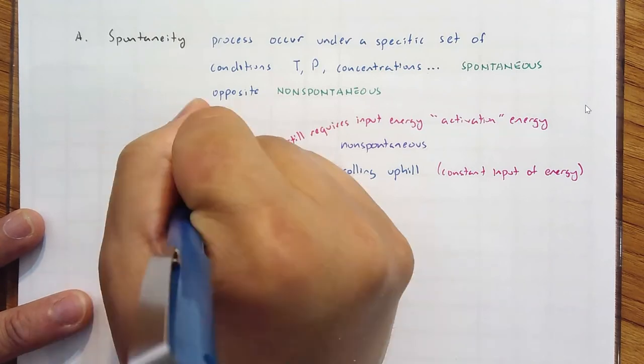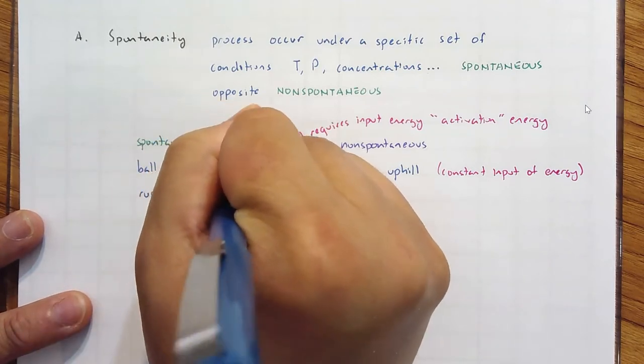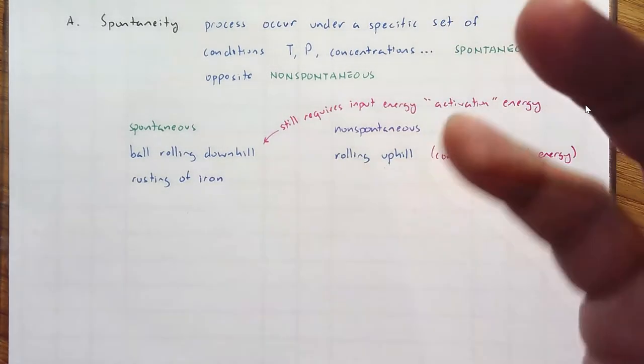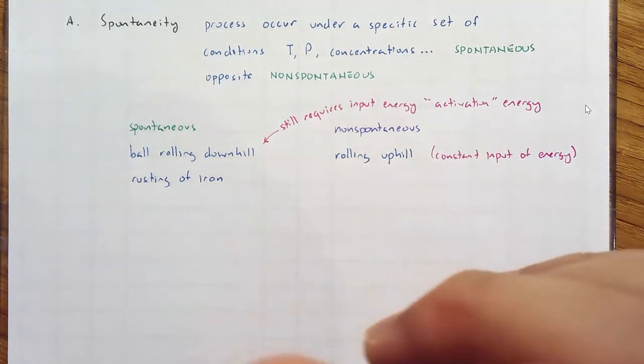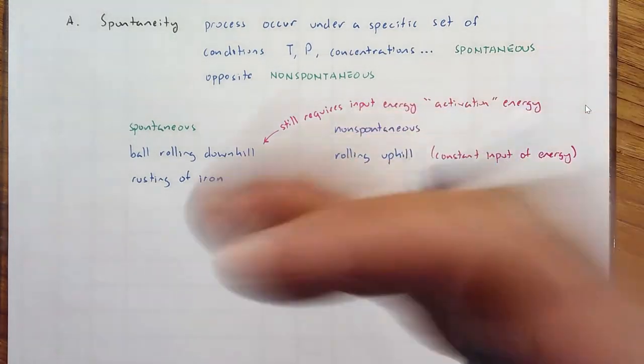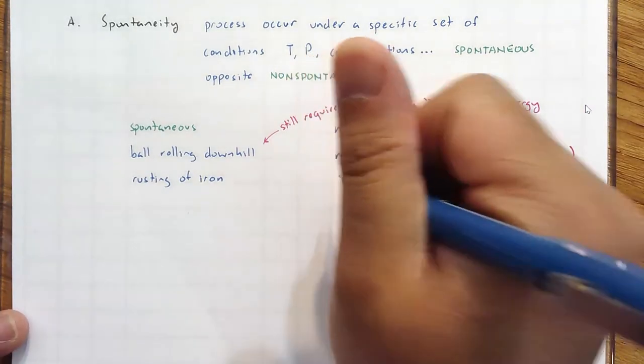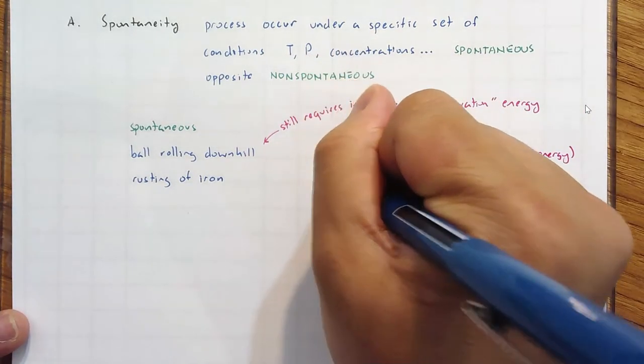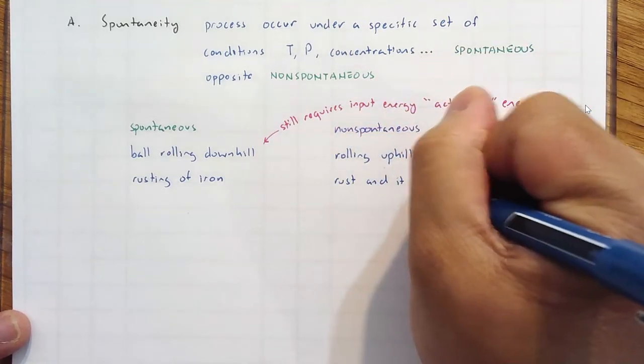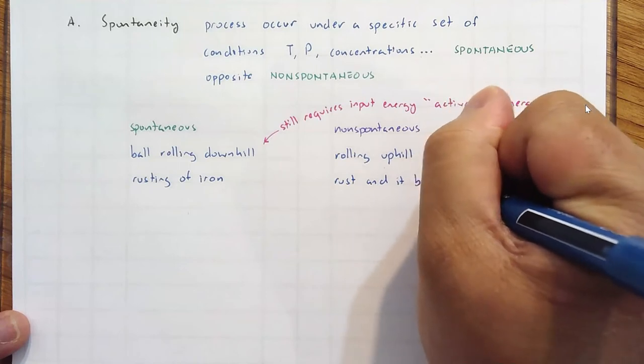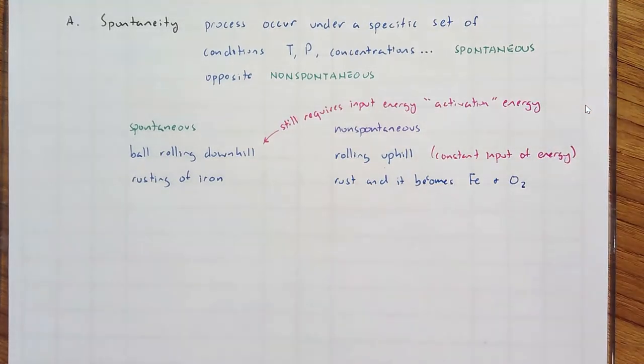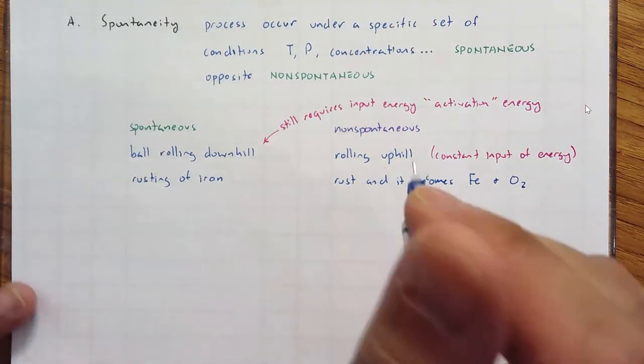Let's say rusting of iron. Over time, iron will naturally rust. Sure, you need oxygen and a little bit of heat, but it is considered spontaneous - it will occur under certain conditions. What will not occur is rust becoming iron and O2. That is non-spontaneous.